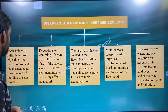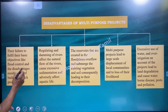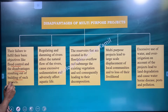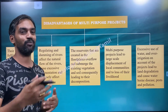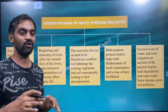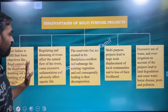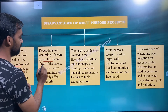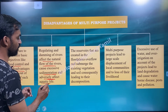Disadvantages of multi-purpose projects: they often fail to fulfill their basic objectives like flood control. The damming of rivers affects the natural flow of rivers, causes excessive sedimentation, and adversely affects aquatic life.